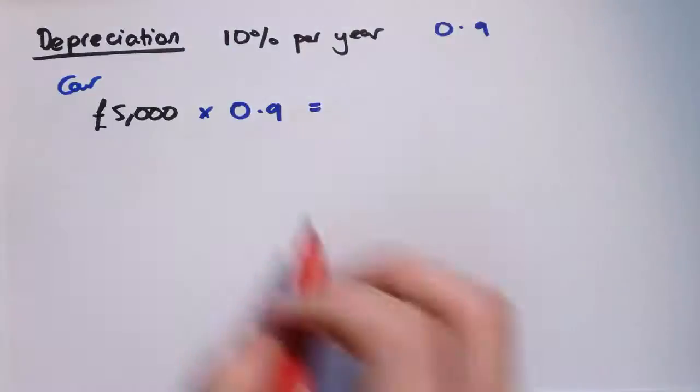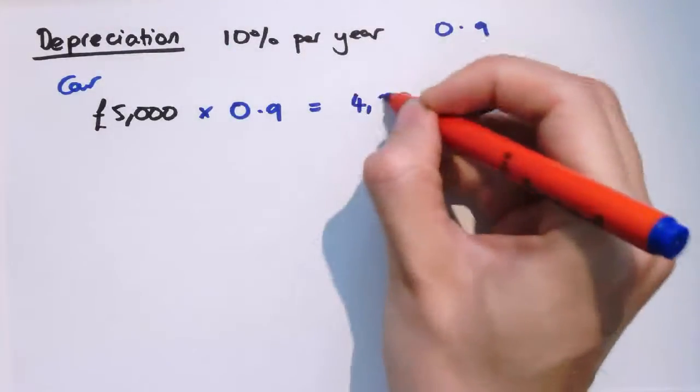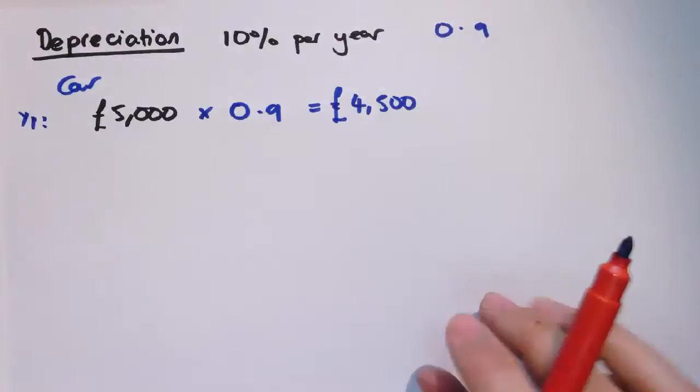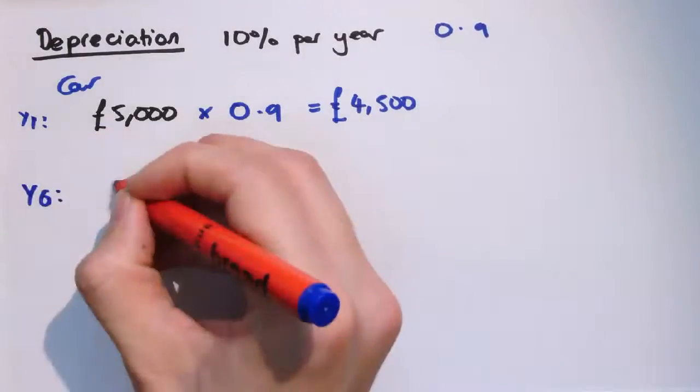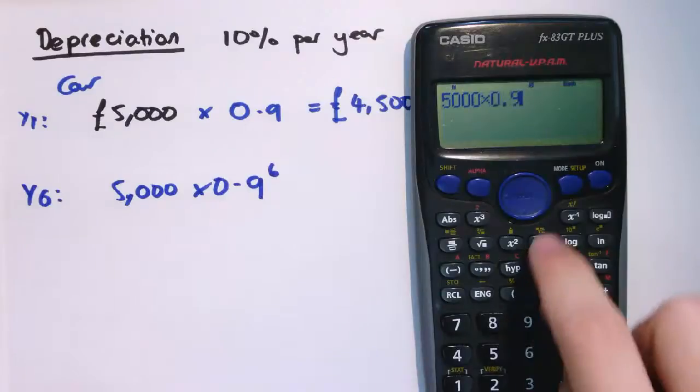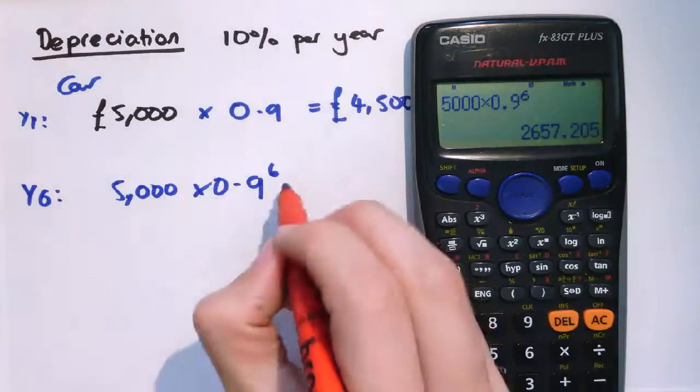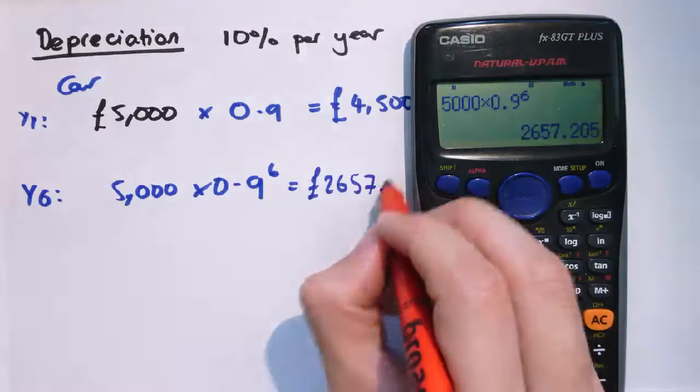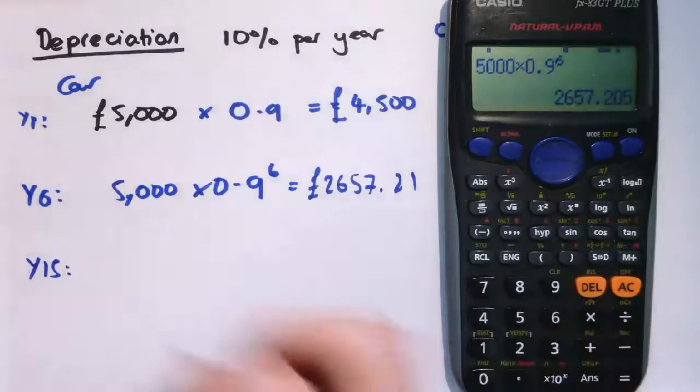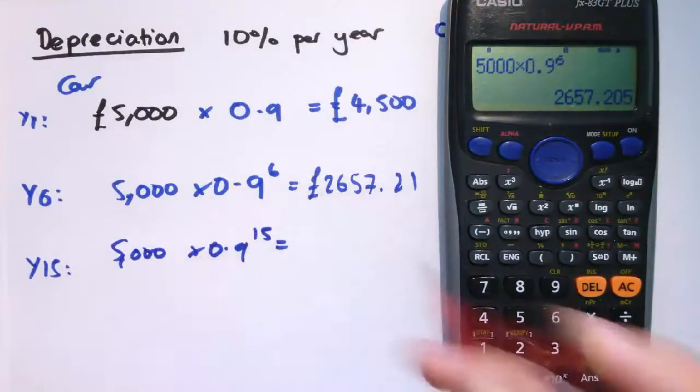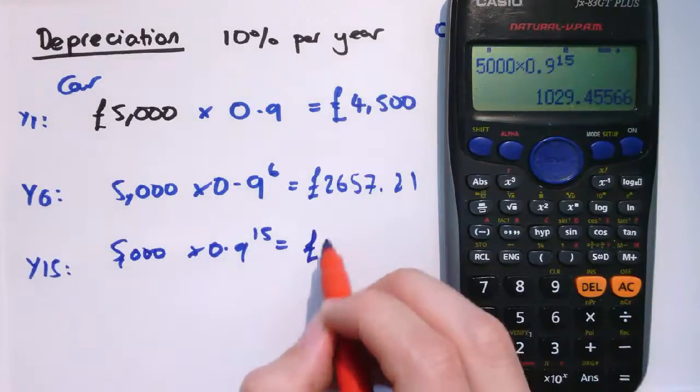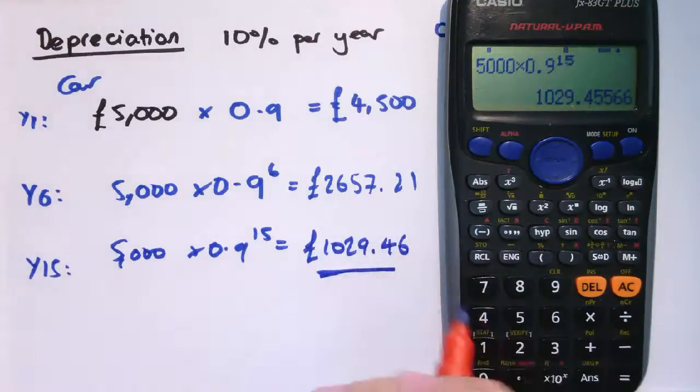So at the end of the first year, the car would have reduced by 10% or £500, and it would be worth £4,500. And again, in the same way we could say that I could do year two by multiplying by 0.9 again, but if I wanted just to go straight to the end of year six, I could say that's 5,000 times 0.9 to the sixth, because I'm going to apply that scale factor of 0.9 six times. Now the car is only worth £2,657.21. At the end of year 15, it would be 5,000 times 0.9 to the 15. That gives us £1,029.46.